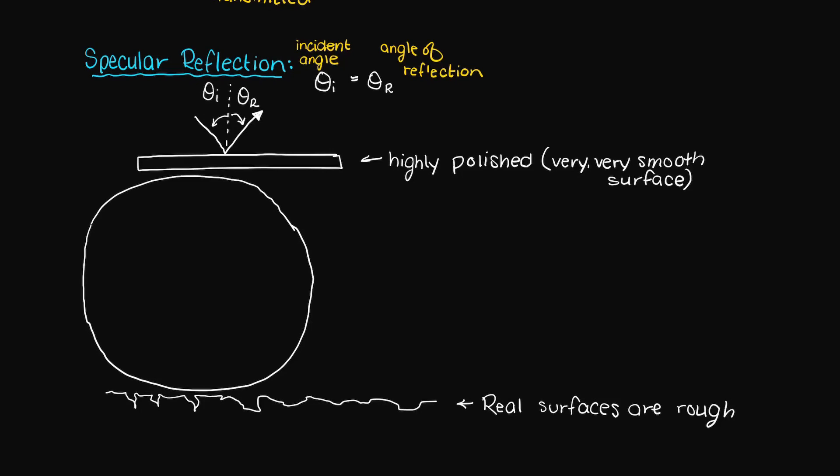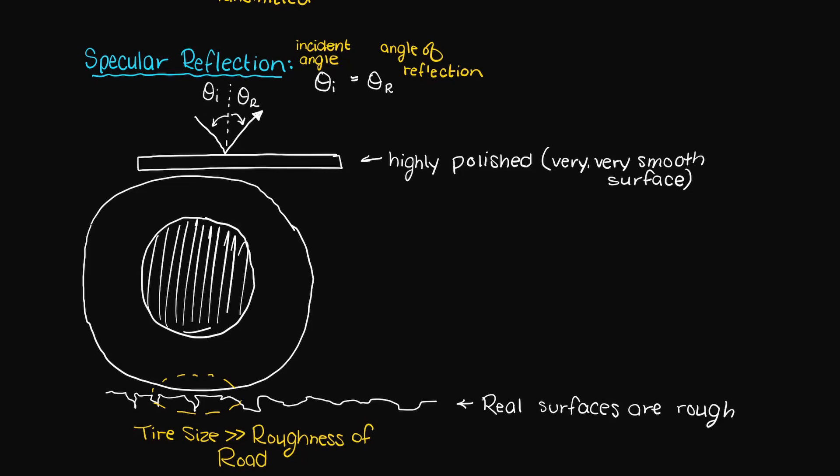And this kind of makes sense if we think about it this way. When you're driving your car on the highway it's very smooth, however imagine you are a microscopic bug driving on the same road. It'll appear much more uneven to the bug than you.